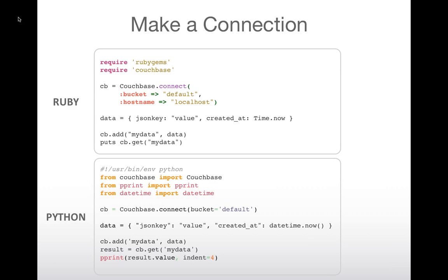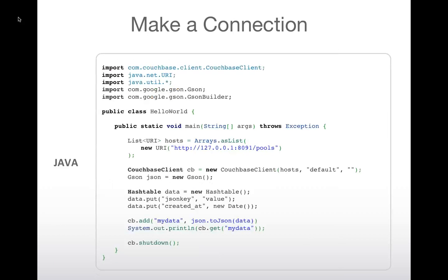One of the first things you're going to want to do is connect to Couchbase. Making a connection is very simple. In Ruby, I'm connecting to a default bucket on my localhost — if I just do Couchbase.new, it'll default to those values. I'm creating a hash, adding that with the key 'my data,' and then retrieving it back and outputting it to the console. For Python, it's very similar, and we do support pickling objects and other things for serialization and deserialization.